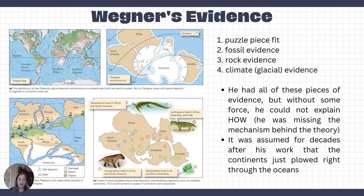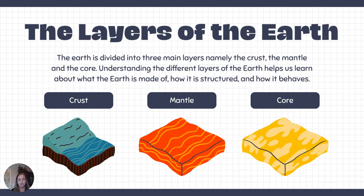The big issue Wegener had was that he didn't have the mechanism — the why or the how these things were moving. After he died, new scientists started entering the picture and working on that theory. Before we talk about those theories, we need to learn about the layers of the Earth. There are three basic layers: the crust, which is what you stand on — the surface of the Earth; the mantle; and the core at the center. We're going to get deeper into each of these.